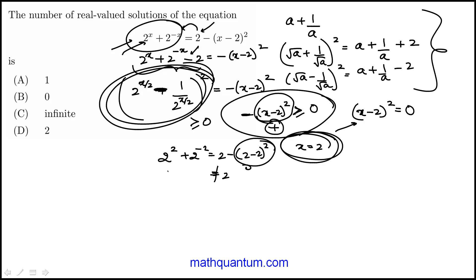This 2 squared plus 2 to the minus 2, which is really 4 plus 1 fourth, is not equal to 2. So even that number that would potentially make that equal to 0 doesn't satisfy, and that means that there are no real valued solutions.